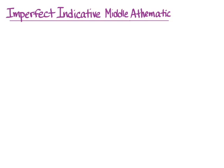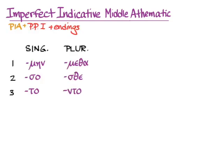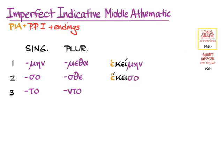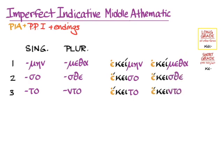In the imperfect, we'll do the past indicative augment and the first principal part plus the endings that we know. And again, we'll use the long grade stem. We'll get ἐκείμην, ἐκεῖσο, ἐκεῖτο, ἐκείμεθα, ἐκεῖσθε, and ἐκεῖντο.